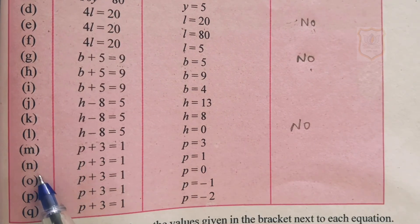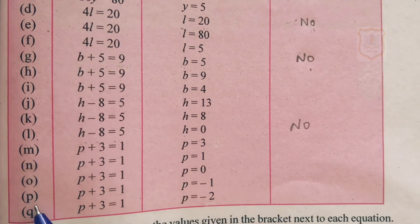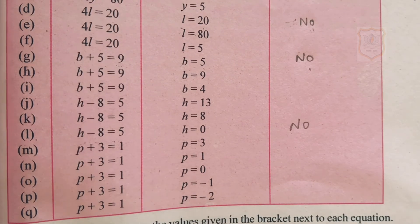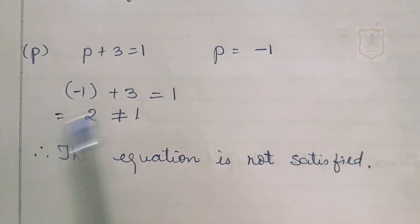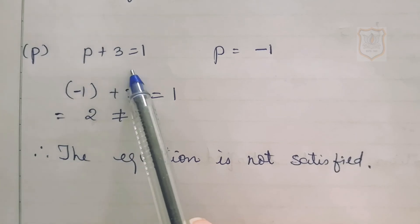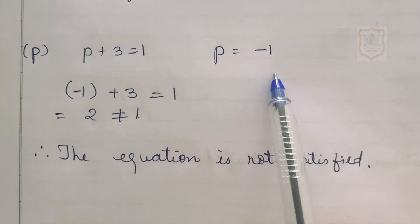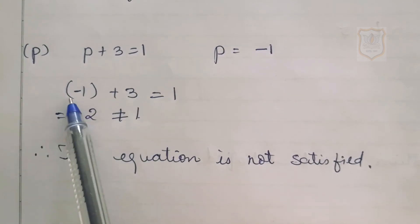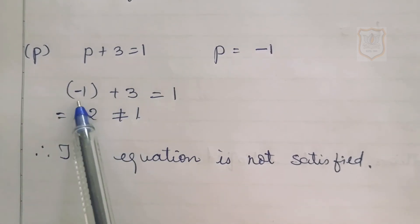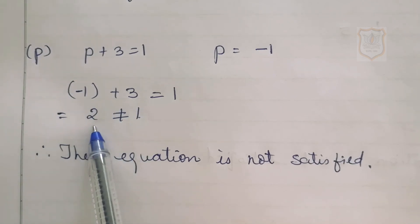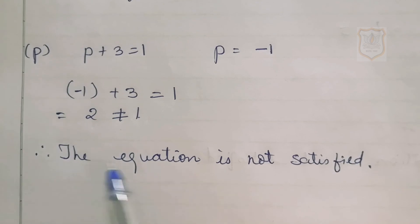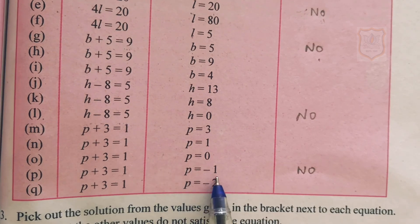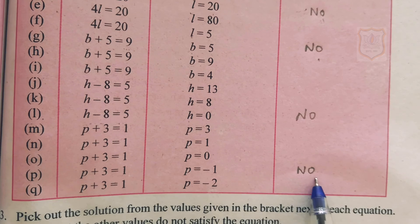Parts M and O of question number 2 you have to do by yourself. Part P: P plus 3 equals 1, where the value of variable P is minus 1. We substitute minus 1 in place of P, so minus 1 plus 3 equals 1. Adding minus 1 with 3 gives 2, since 3 minus 1 equals 2. So 2 is not equal to 1. The equation is not satisfied — answer is no.